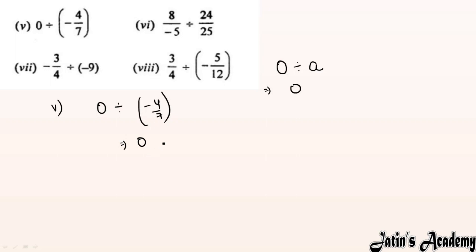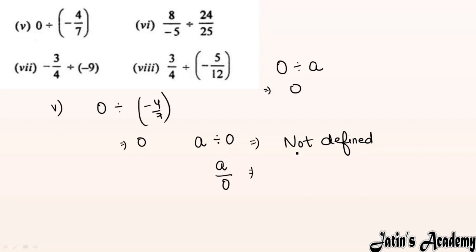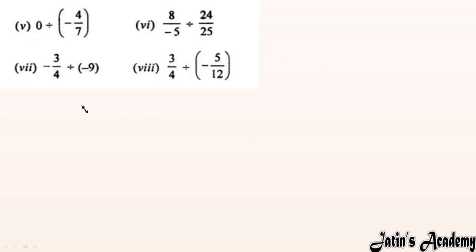There is also a special case: if any rational number is divided by zero — for example a ÷ 0, or a/0 — the answer is always 'not defined'. Any number divided by zero gives not defined.